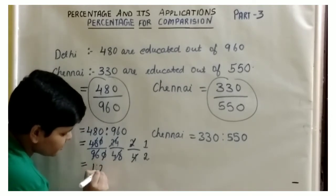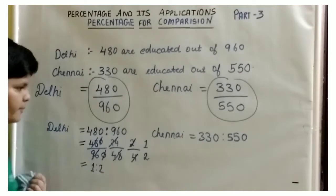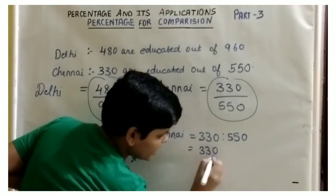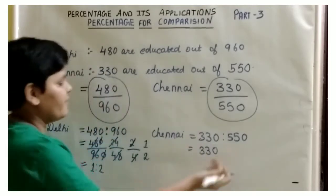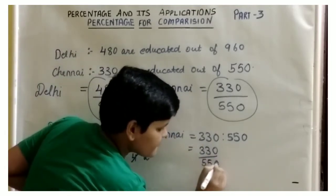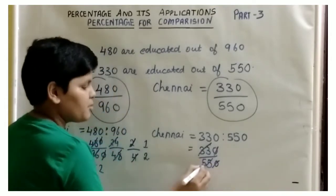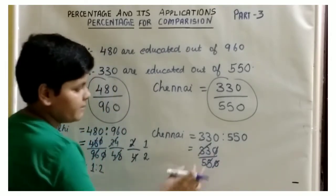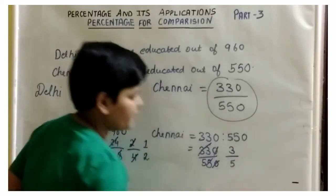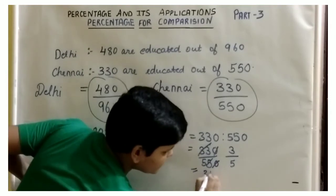After simplification, we get 1 is to 2. So the ratio for Delhi is 1 is to 2. For Chennai, it is 330 is to 550. We simplify by cancelling the zeros to get 33 by 55, and then dividing by 11: 11 times 3 is 33, and 11 times 5 is 55. The ratio we get for Chennai is 3 is to 5.